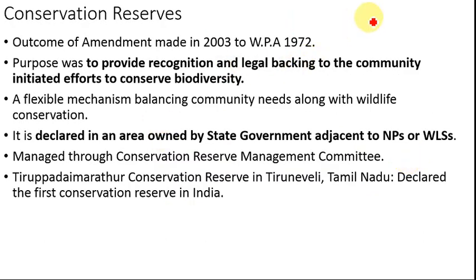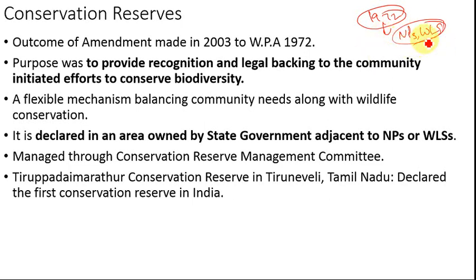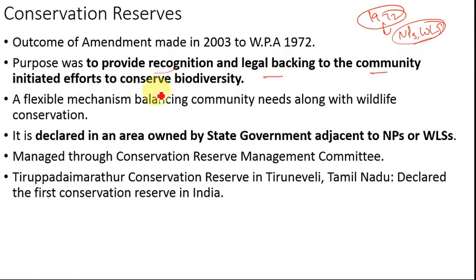Conservation reserves were added by the 2003 amendment to the Wildlife Protection Act 1972. Earlier there were only two categories — national parks and wildlife sanctuaries. The amendment provided that certain areas can also be declared as conservation reserves or community reserves. The particular purpose is to provide recognition as well as legal backing to community-initiated efforts to conserve biodiversity.